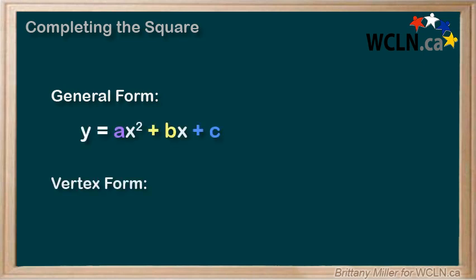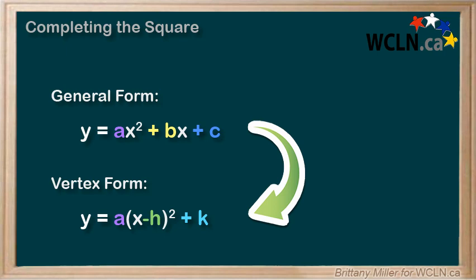That means we have ax squared plus bx plus c and we want it to look like a times x minus h squared plus k.